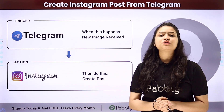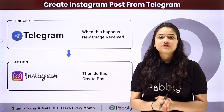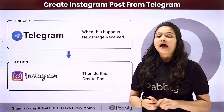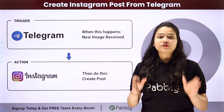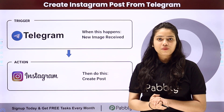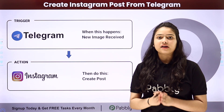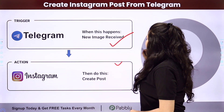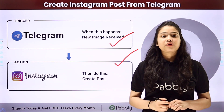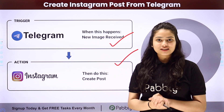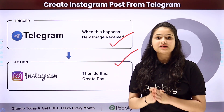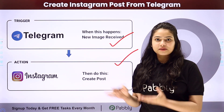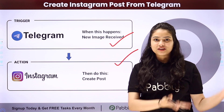So how are we going to automate this entire process? We will have to set up a connection between Telegram and Instagram, and we are going to do that without any coding or programming skills with the help of Pabbly Connect. We have Telegram in our trigger and Instagram in our action. Let me take you all to my screen.